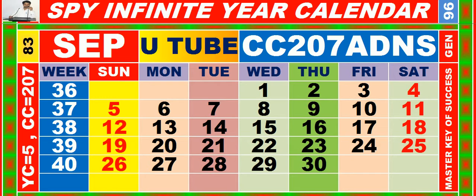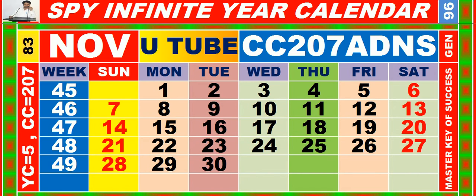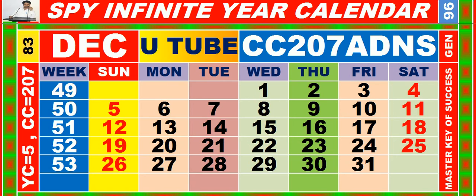Calendar for the month of November, having calendar code equal to 207. Calendar for the month of December, having calendar code equal to 2-0-7.